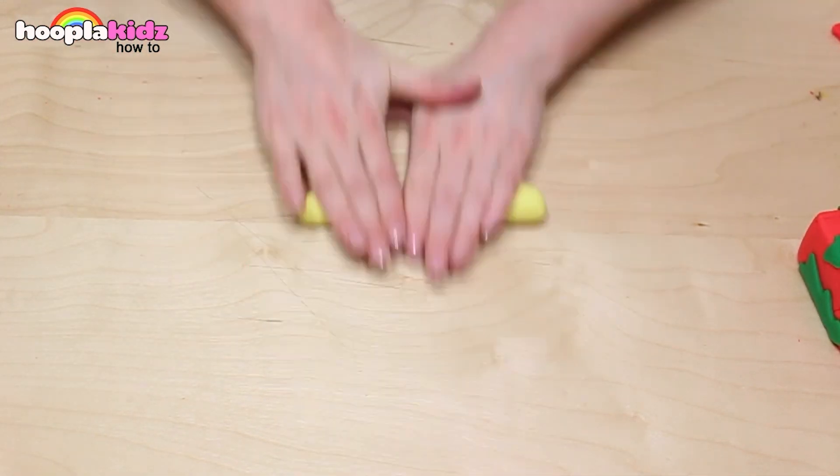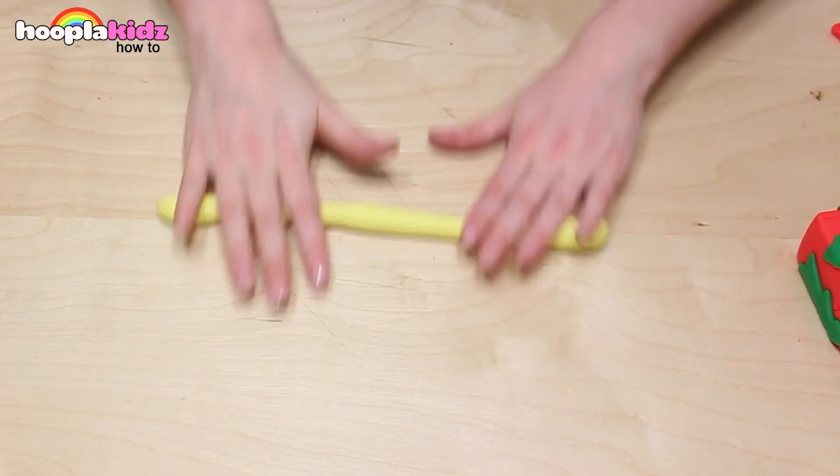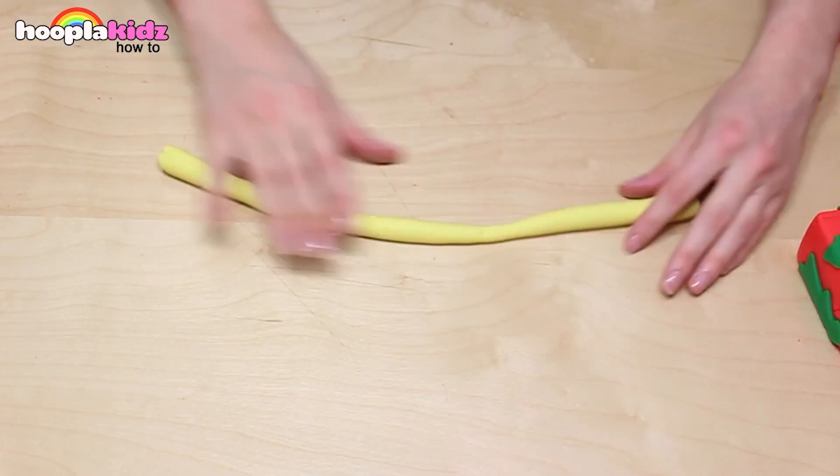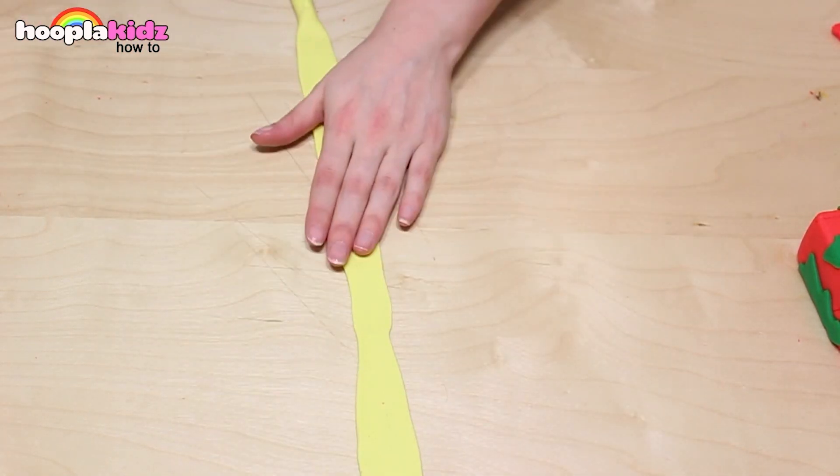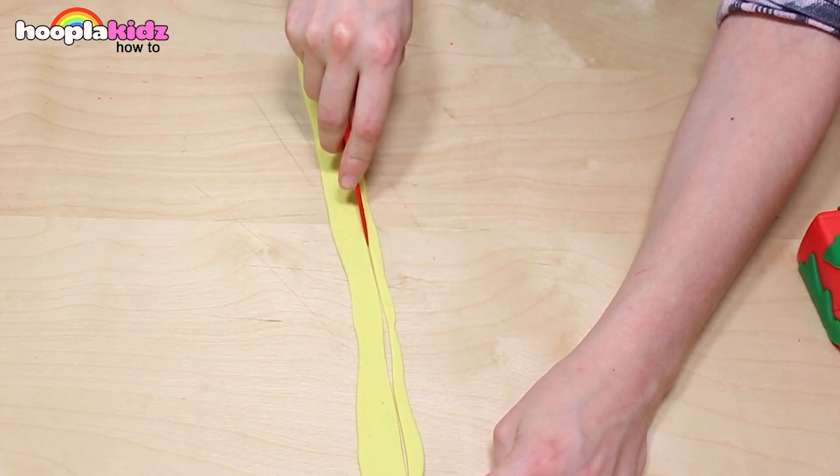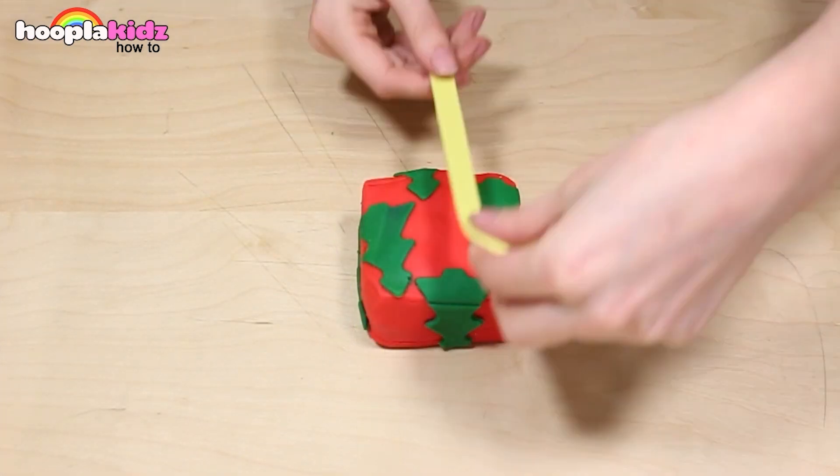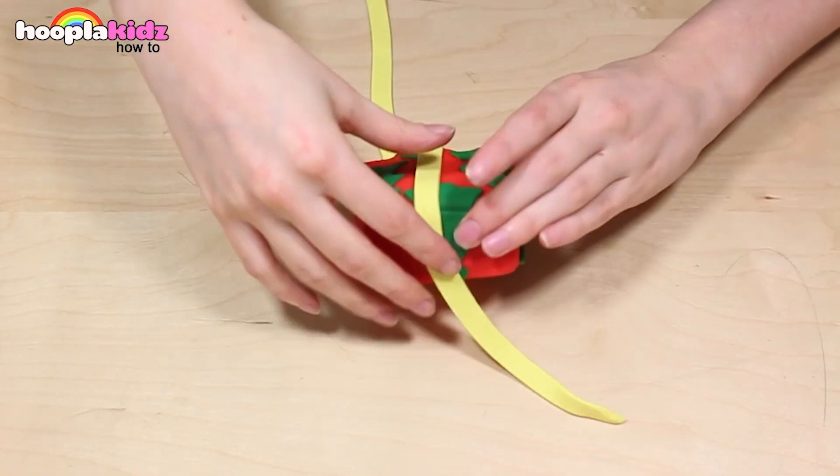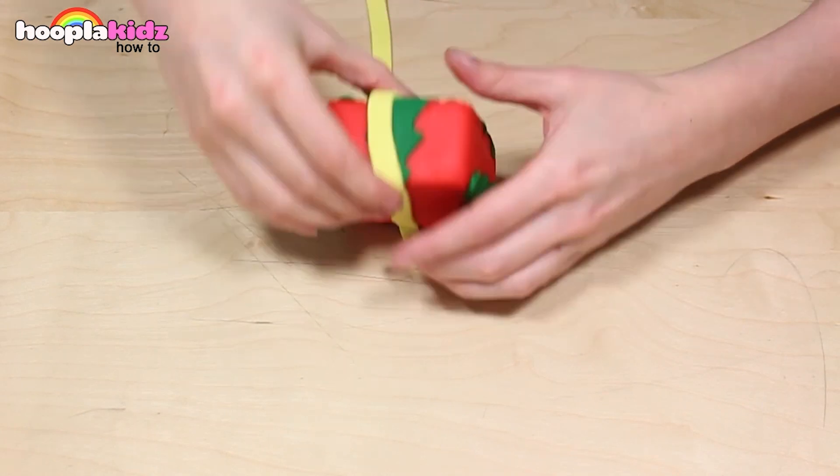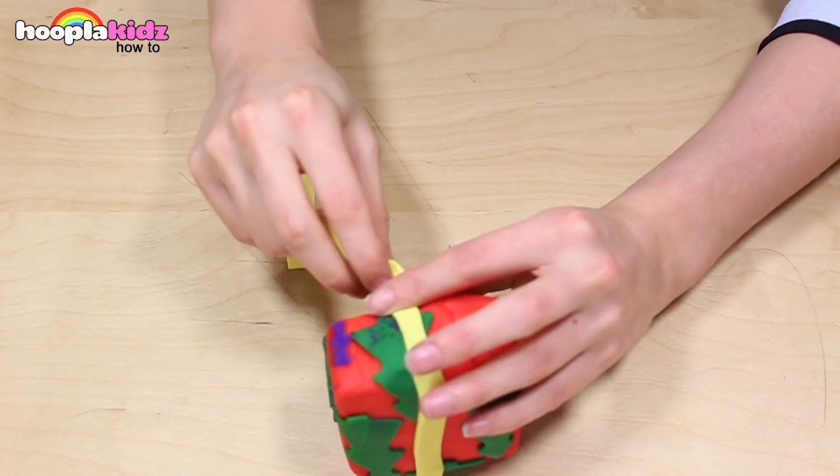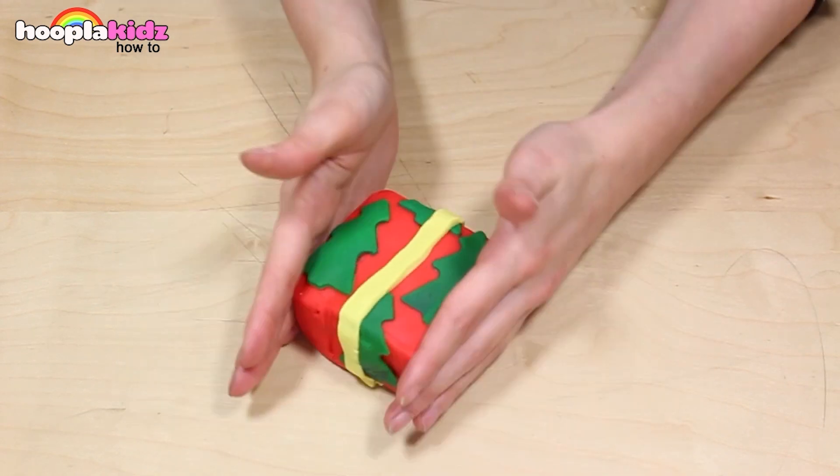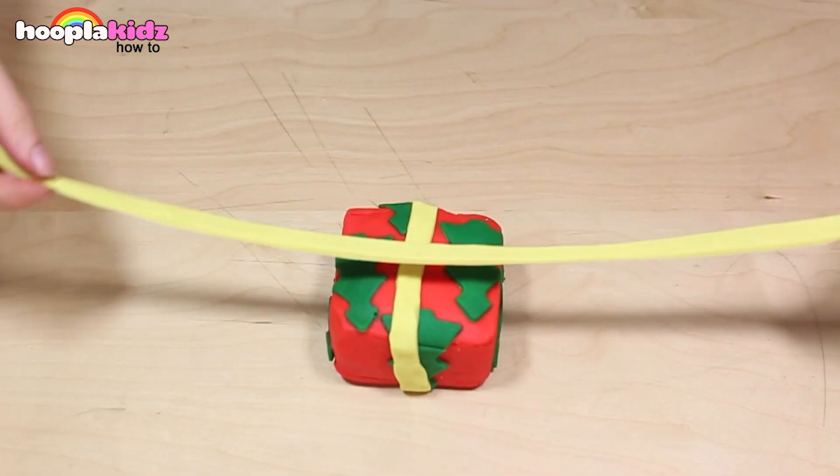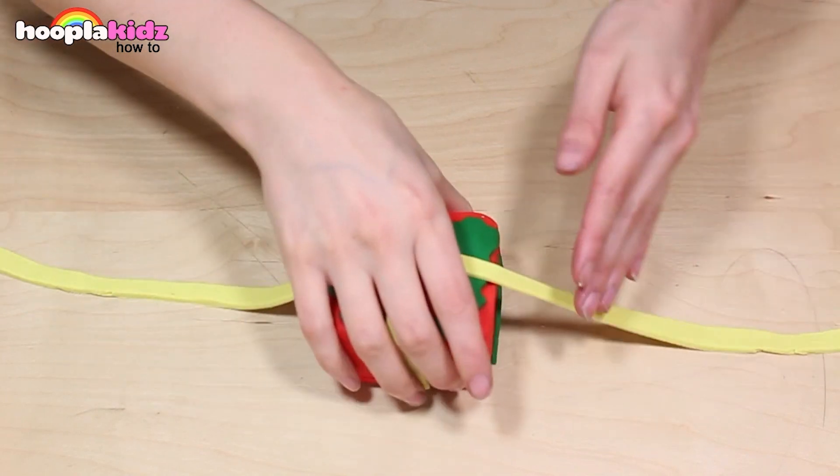Now I'm taking some light yellow Play-Doh. I'm rolling it flat. I'm making some ribbon. Wrap it around the present and it looks great! Now I'm doing another piece the other way.